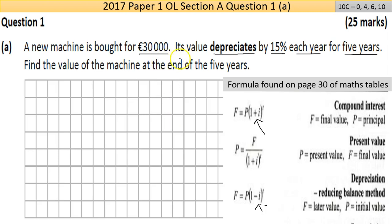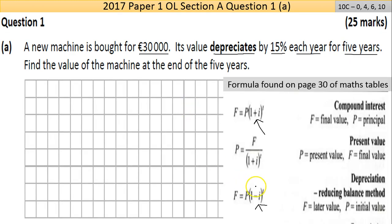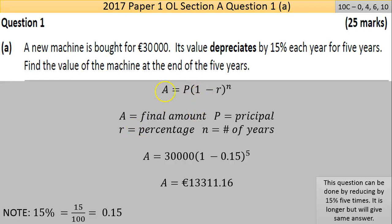For the answer here, I've chosen the depreciation formula. I might have written it a little bit differently than the final value equals the principle times whatever. I've broken it down: A is the final amount, P is the principle, R is the percentage, and N is the number of years. Once you have your formula, I would write the formula down.